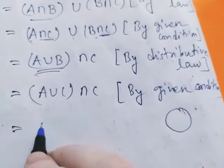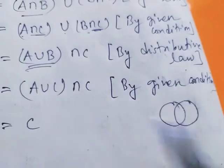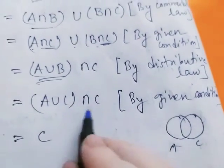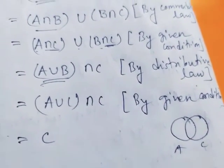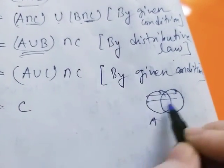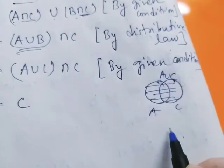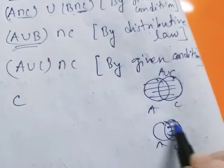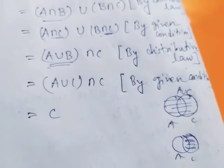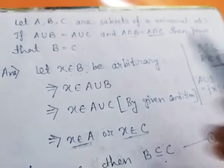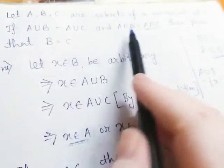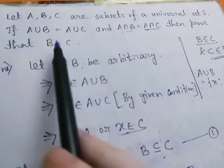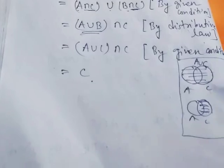Now A union B equals A union C by the given condition, so substituting, we apply the absorptive law: (A union C) intersection C equals C. Therefore B equals C. So if A union B equals A union C and A intersection B equals A intersection C, then B equals C. Proved.